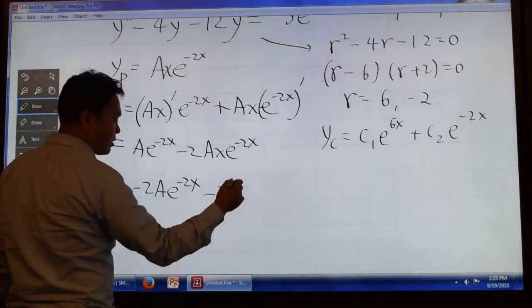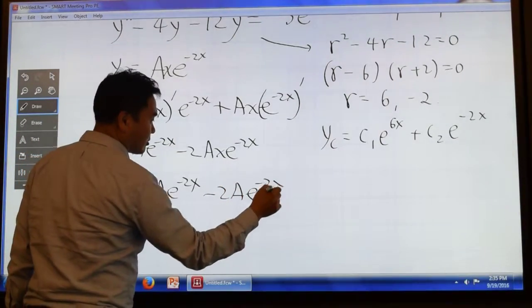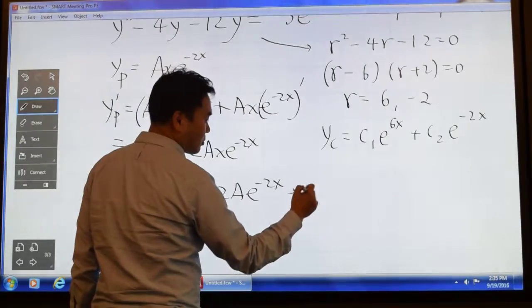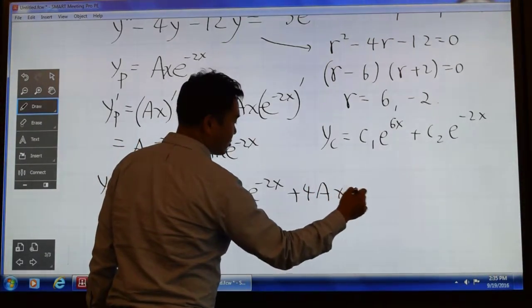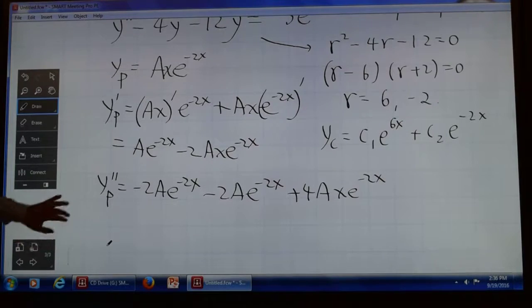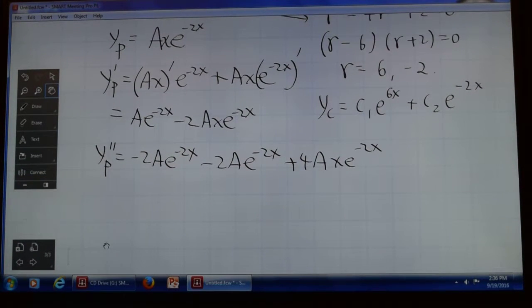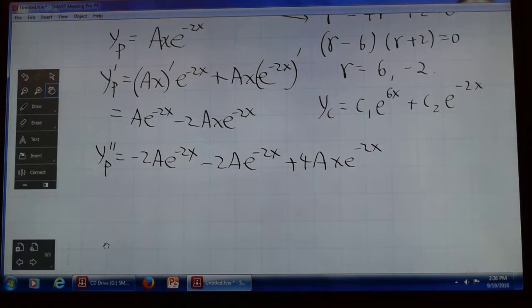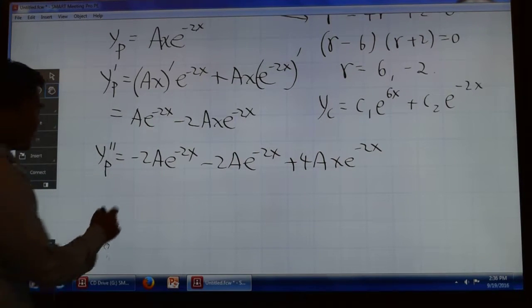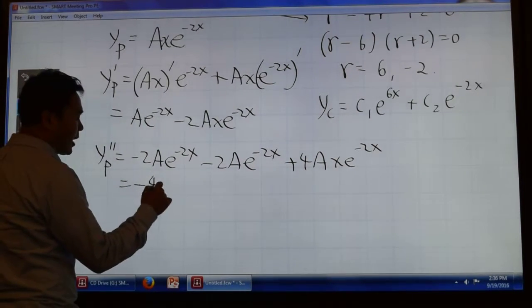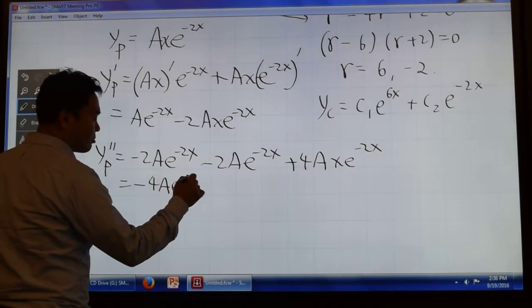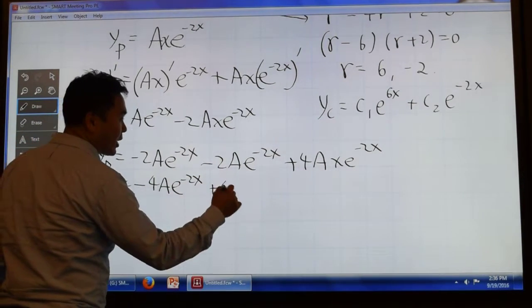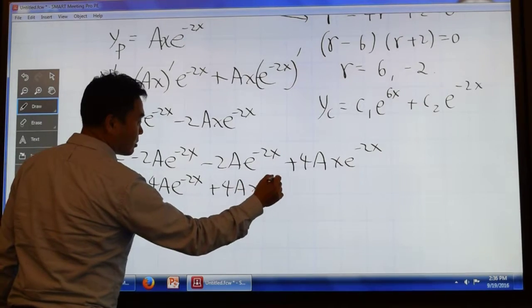This one is what we call the complementary solution. We always solve the complementary solution, regardless of whether you have duplication or not. You always do that. Because at the end of the day, you have to add the complementary solution to the particular solution to get the general solution, right? So, we have this. If you differentiate one more time, you get negative 2A times e to the negative 2X, and then you will be having the same thing with negative 2 multiplied. So, it would be negative 2A times e to the negative 2X plus 4AX times e to the negative 2X.